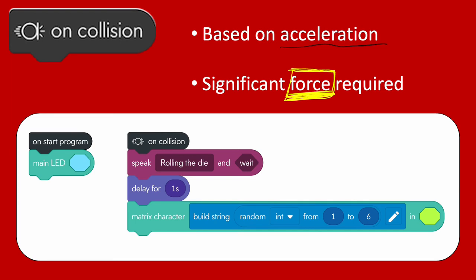Here's a program that uses on-collision. I like to code something that happens at the outset just to confirm the program is on and ready. Then on collision — when I clap the robot in my hands — it speaks 'roll the die,' delays for a second, and shows a single matrix character on the LED matrix. I built a string and inside it put an operator telling the program to pick a random integer between one and six, the same as a die roll. You could also build in all the dot combinations that correspond to those numbers for a more realistic die display.